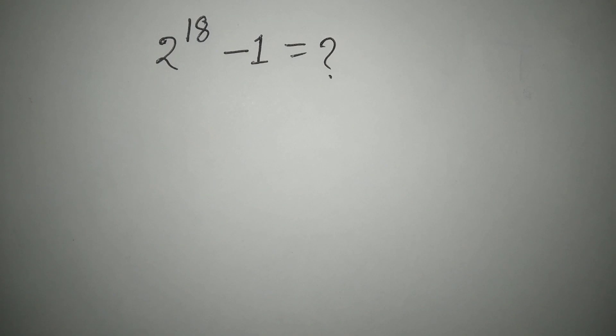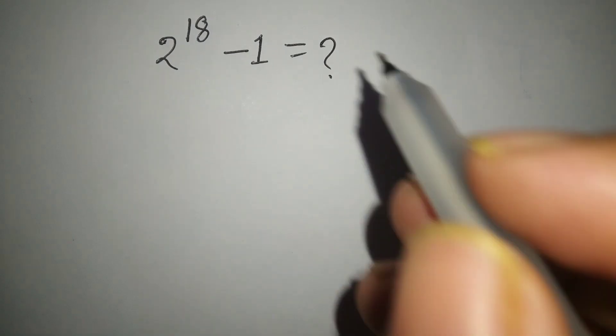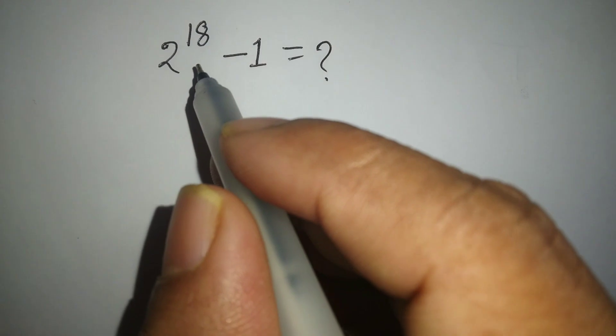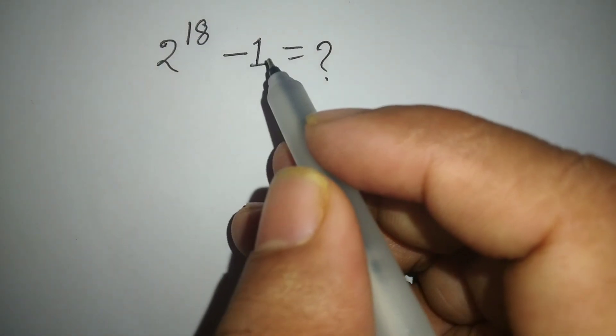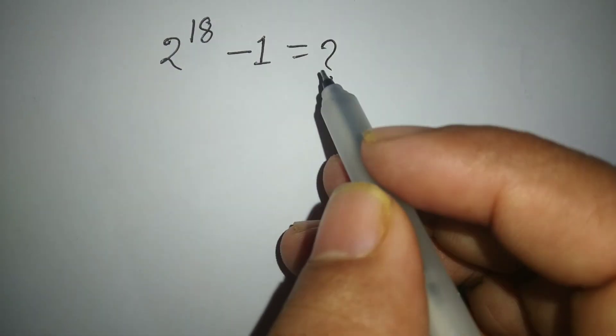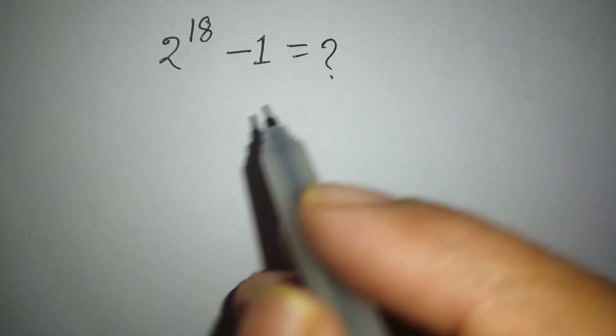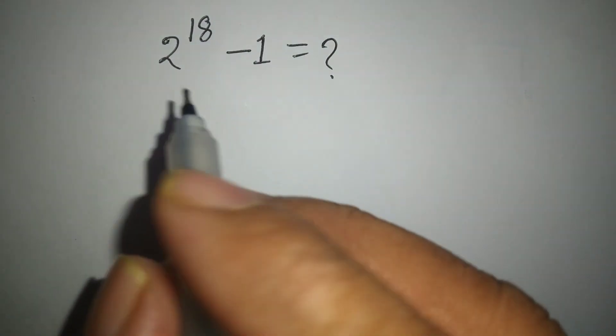Hi guys. Today I am going to solve this math problem: 2 to the power 18 minus 1 equals what? So let's start.